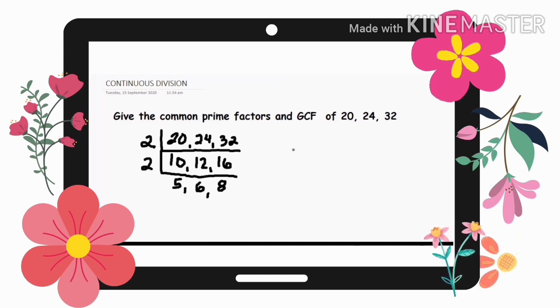So, para mahanap naman natin ang kanyang GCF, kung naaalala nyo, imumultiply natin itong mga naka-vertical na number. Okay. So, yung 2 times 2 is equal to 4.